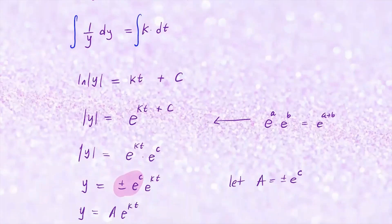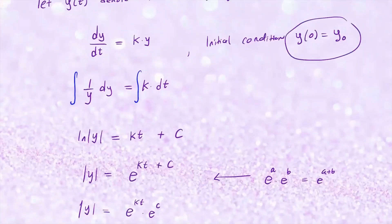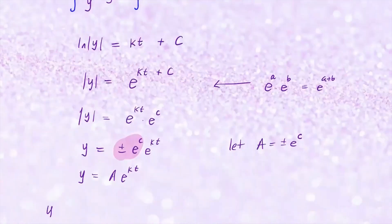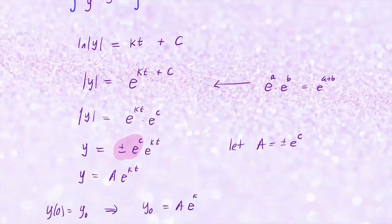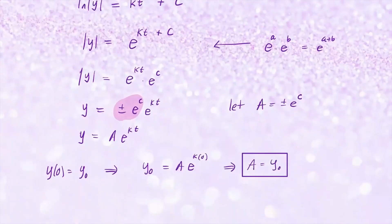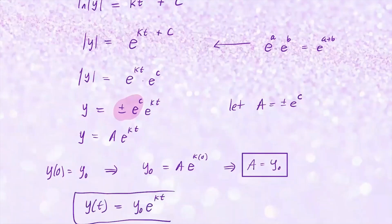Now let's impose the initial condition. We plug in t equals zero, and that's going to equal y-naught. So when y of zero equals y-naught, we have y-naught equals a times e to the k times zero, which simply gives us a equals y-naught. So our model is y of t equals y-naught times e to the kt. That's the function we'll use when analyzing population growth or any exponential growth problem.